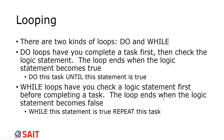A while loop checks the logic statement first before completing a task — the loop ends when the logic statement becomes false. For example, while I am still hungry or while I still have money, I will keep going back to the salad bar, repeating until I am full or run out of money. Once the while statement becomes false, I stop. That's how looping works — for this class you just need to understand the theory, not implement it in programming form.